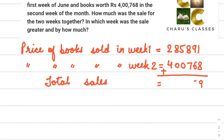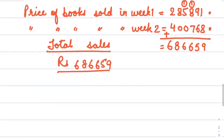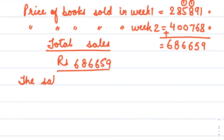Total sales is the sum of these two. Adding: 1+8=9, 9+6=15 write 5 carry 1, 8+7+1=16 write 6 carry 1, 5+0+1=6, 8+0=8, 2+4=6. Total sales is rupees 6 lakh 86 thousand 6 hundred 59. The second part of the question asks in which week the sale was greater — clearly week 2 has the bigger number, so the sale was higher in week 2.